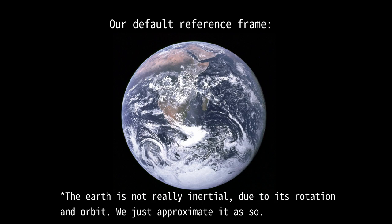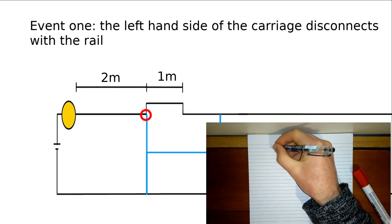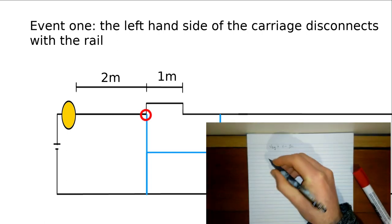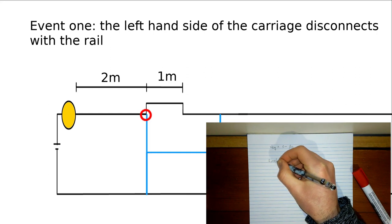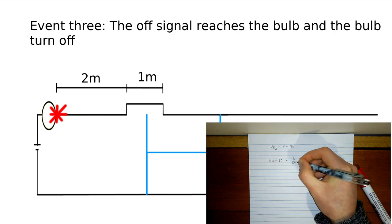No reference frame should be preferred over another. Because the rail is length contracted and the carriage is normal from the frame of the carriage, the right hand side of the gap reaches the carriage first. In other words, event 2 occurs before event 1. Let's start the clock here and call it time 0. Event 1 occurs 1 divided by beta c after event 2, by the same argument as in the rail frame.